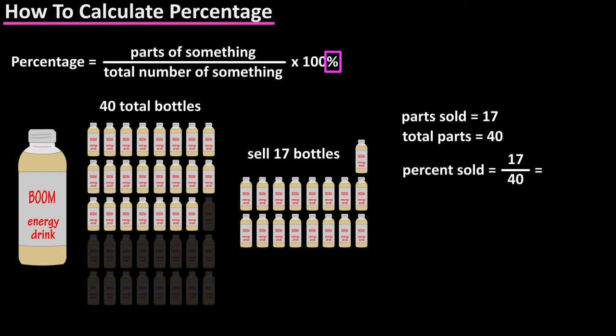To calculate the percentage sold, we divide the numerator, the top number, by the denominator, the bottom number. So we divide 17 by 40, and doing so we get .425.